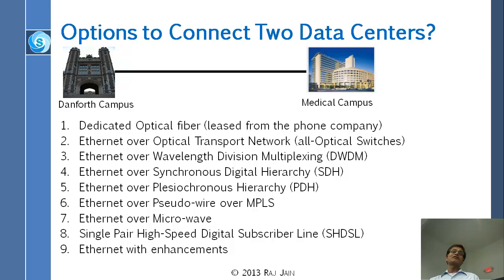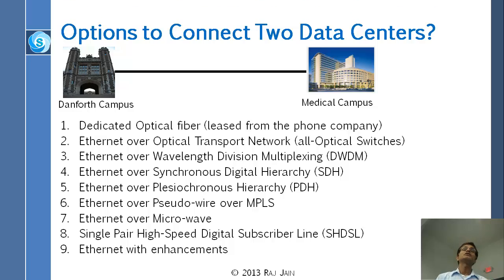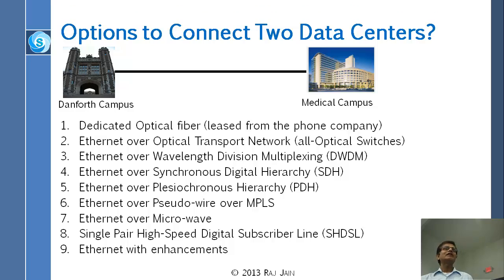If you can't even afford a wavelength, which most of us cannot, then you get what we call a SONET link — SDH, Synchronous Digital Hierarchy. This is a link and we will talk about it in a minute. That is still not in the reach of you and me, but probably WashU can pay for it, and probably WashU has a link at 155 megabit between the two campuses. After that, if you can't afford that, you go down the list to PDH. That is cheaper and lower speed.